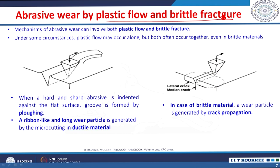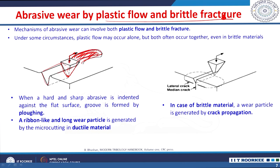When a hard, sharp abrasive slides against a soft ductile surface, a groove forms as a result of ploughing. The resultant wear particle is ribbon-like or a long wear particle, generated mainly by ploughing or micro-cutting. Cutting is more severe than ploughing, but the mechanism is similar. In ductile materials, a very long ribbon-like wear particle is the result of ploughing.